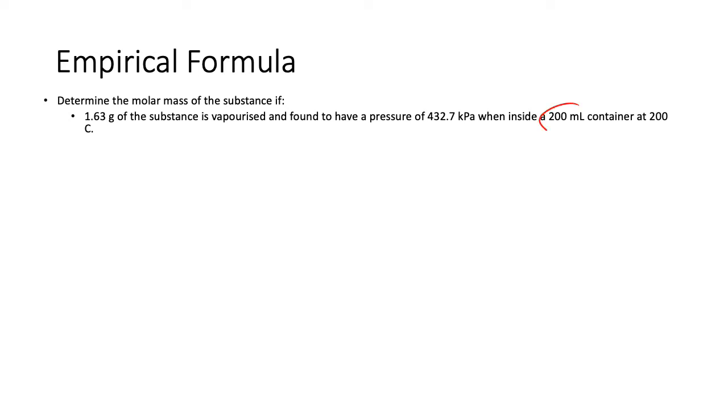Determine the molar mass of a substance if 1.63 grams of the substance is vaporized and found to have a pressure of 432.7 kilopascals when inside a 200 mL container at 200 degrees Celsius. Number one, make sure you convert this to liters, the volume into liters and the temperature into Kelvin, otherwise you're not going to be able to do this calculation right.